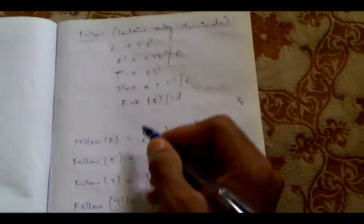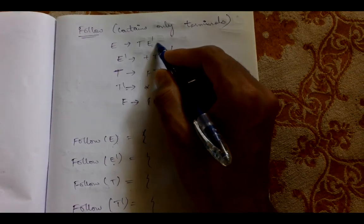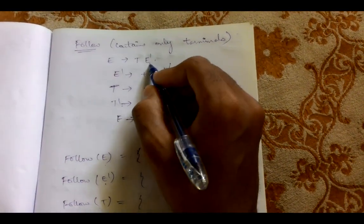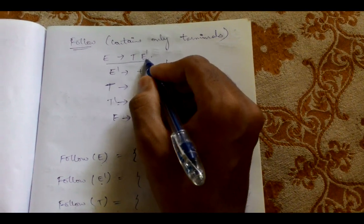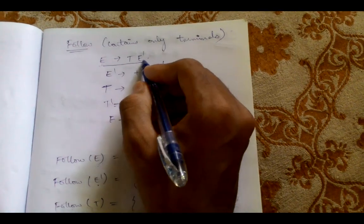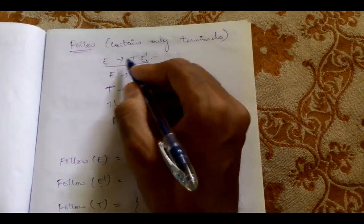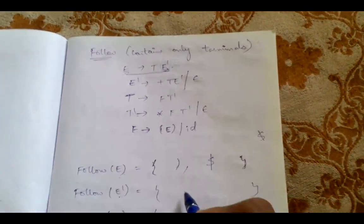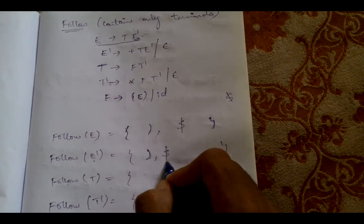Now coming to follow of E'. We need to look for E' in the right hand side of the grammar. We find E' in this expansion, but there is nothing after E'. Whenever a non-terminal appears at the end of a production, the follow of that non-terminal will contain the follow elements of the left hand side non-terminal. Since E' is at the end of the expansion of E, whatever follows E will also follow E'. So follow of E' contains closing bracket and dollar.